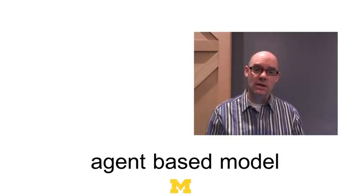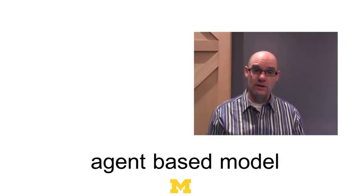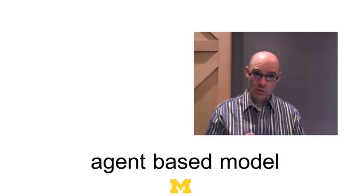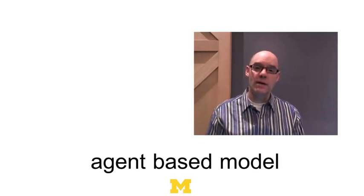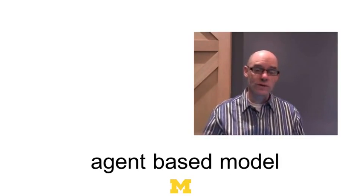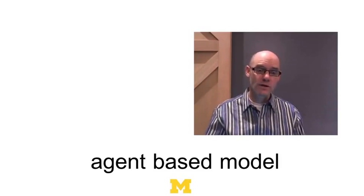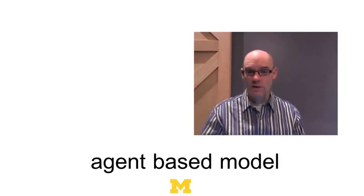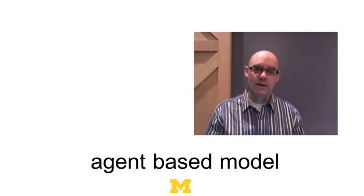Remember an agent-based model? You've got three things. First, you've got agents — in this case, people. Second, you have their behaviors — what rules do they follow? And then the third part is you just aggregate it and see what happens. When all these people are following these rules, what do we get at the aggregate level?